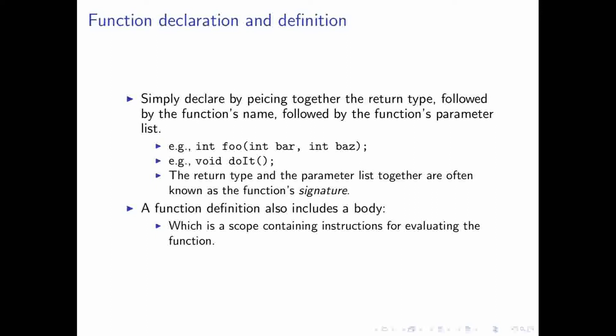The return type itself, if you combine that with the parameter list, that is something known as the function signature. And then if you define a function, it also includes the body, which is basically if you take out that semicolon in the declaration, and then replace it with the block, and then put all those statements in the block, then that creates the local scope for the function.